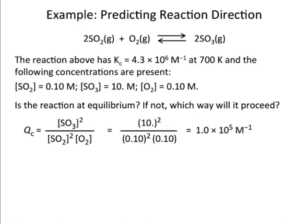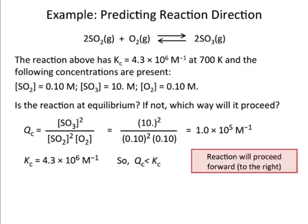Now, looking at this, Q is less than K. 10 to the fifth is less than 10 to the sixth. So, we need to make Q bigger, which means we need to make more products and less reactants, which means we need to shift this reaction to the right. So, there's the logic for that. Q is less than K, the reaction is going to go to the right. And there you go.